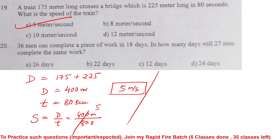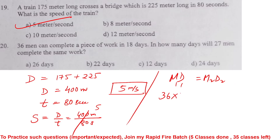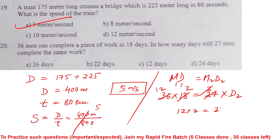Question 20: 6 men can complete a piece of work in 18 days. In how many days will 27 men complete the same work? Using M1 × D1 = M2 × D2: 6 × 18 = 27 × D2, so D2 = 108 / 27 = 4 days. Option D is the correct answer.